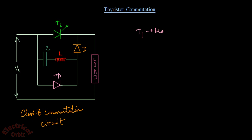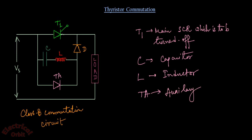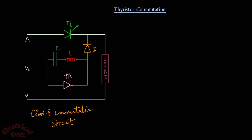Let us discuss about the circuit components. T1 is the main thyristor or SCR which is to be turned off. C is the capacitor, L is an inductor, TA is an auxiliary SCR or thyristor, and D is a diode.